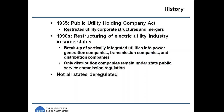From 1935 until the early 1990s, electric utilities were all vertically integrated, regulated companies. This means that one company would own every aspect of the business — owning power plants, high voltage transmission lines, and the distribution lines that deliver power to homes and businesses. Such companies were regulated by State Public Service Commissions, which were charged with ensuring that utilities charged just and reasonable rates to customers, set to recover the utility's cost of service and allow the utility to earn a profit.